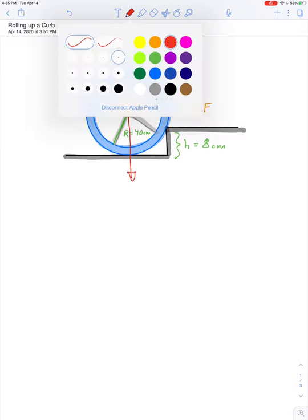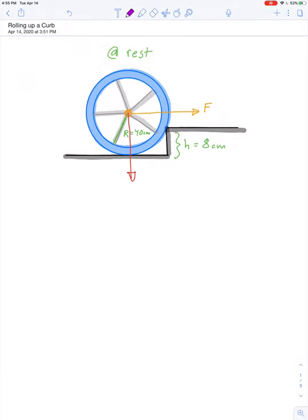There's also a couple of normal forces, contact forces. So the wheel contacts the ground here, so there's going to be some upward normal force, and there's another normal force that acts right at this point of contact.